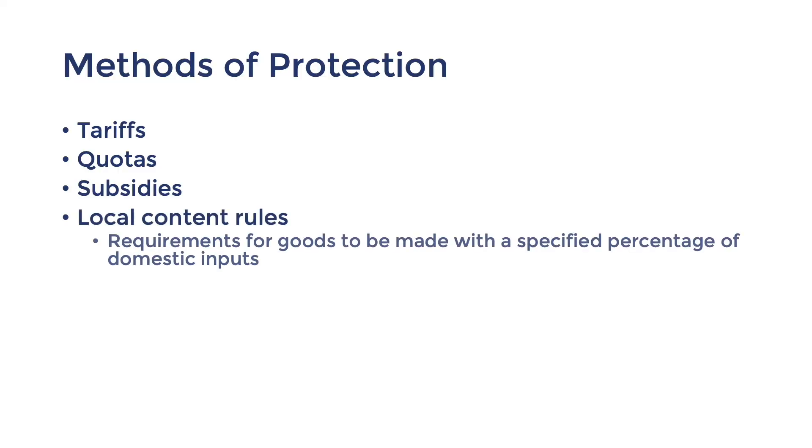A couple more methods of protection that we must study are local content rules and export incentives. There are no diagrams involved, but let's check out the definitions and their impacts. Local content rules are when the government requires goods to be made with a specified percentage of domestic inputs. This minimizes the amount of import spending and generates income for the domestic economy. One example is the production of submarines. Even though they're produced by a foreign contractor, they must include a certain percentage of Australian steel and hire an Australian workforce. TV and radio broadcasters are another example. A specified amount of their broadcasting time must feature Australian shows and songs, which provides employment and incomes for Australian producers and artists.